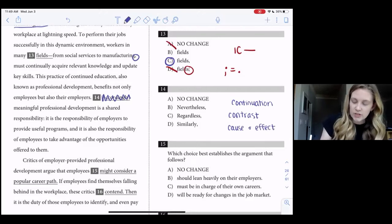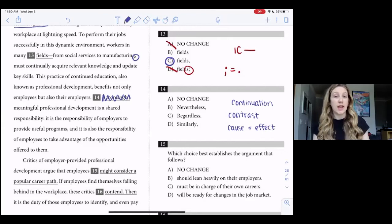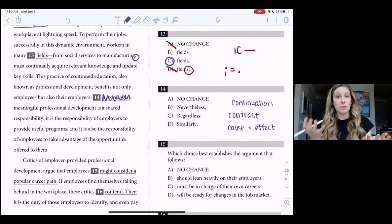So any transition word will fall into one of these three categories, and by identifying the relationship between the two sentences, we can figure out which category our answer choice should be in. So our first sentence told us that professional development is useful for employees and employers. Then the second sentence told us that the professional development is a shared responsibility. So both parties get something out of it, and both parties are responsible for it.